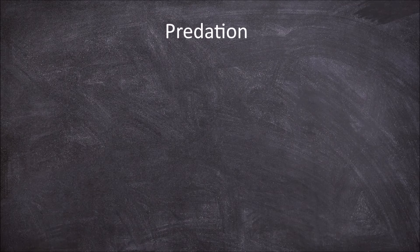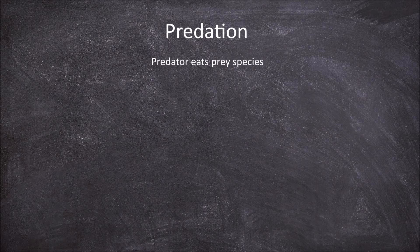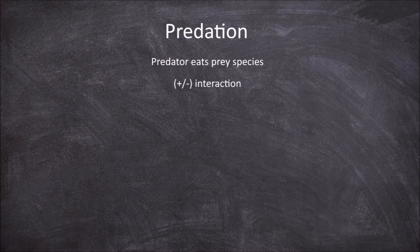In this video we're going to go over predation and the relationship between predators and prey. In these relationships the predator species eats the prey species. These interactions are positive-negative interactions, as one gets a food source from the other whilst the other dies or is harmed as a result of the interaction.